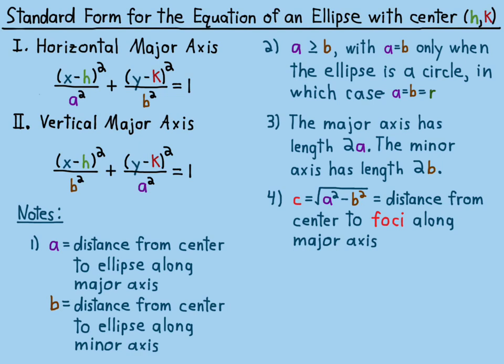When c equals zero, that means the two foci are fused into one at the center of the circle — at distance zero from the center. So c is the distance from the center along the major axis to each focus: c = √(a² - b²). There's also something called the eccentricity of an ellipse — you may have heard this in the context of planetary orbits. By definition, eccentricity e = c / a, where c is the distance from the center to a focus and a is the distance from the center to the vertex.